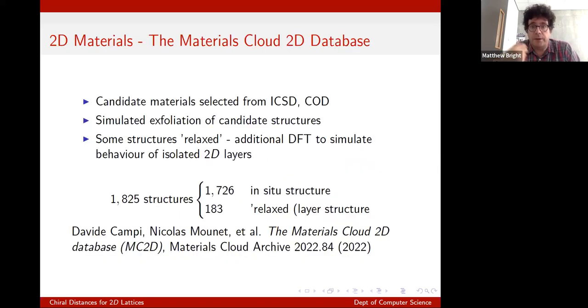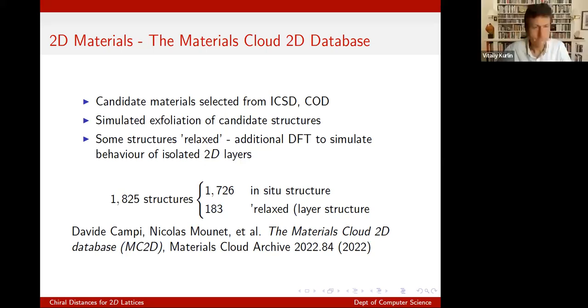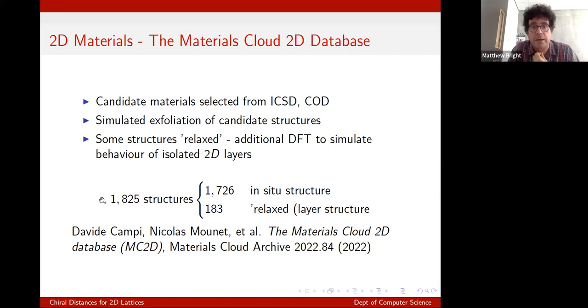The other thing we want to show is the materials cloud database. How am I doing for time? I think five more minutes. In that case, I'll just gently go through this. So the materials cloud 2D database of Campi and Marzari is interesting because they have in fact simulated these candidate structures as being exfoliated. But only some of the structures they've then relaxed. They've done some additional DFT to simulate how the 2D layers would behave. And this shows that even having selected a possibly asymmetric layer structure, you have to be quite careful.